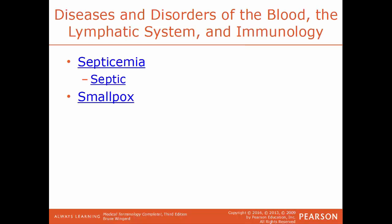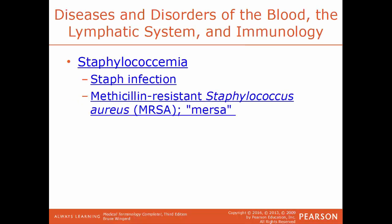Staphylococcemia refers to the presence of staphylococci within the blood. Staphylococci are round spherical cocci bacteria that grow in clusters like grapes on a vine. This is commonly referred to as a staph infection. MRSA — Methicillin-Resistant Staphylococcus aureus — is important because the antibiotic methicillin, used to treat Staph aureus for so long, has caused many strains to mutate and become resistant to that treatment.